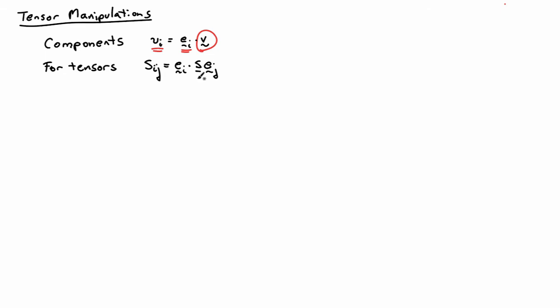What we do is we apply S to a basis vector, let's say EJ, and then that will give us a vector. Then we take the dot product of that vector with another basis vector, say EI. So I and J can be one, two, or three. And that gives us the nine components of the tensor.